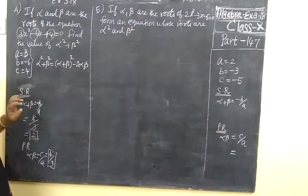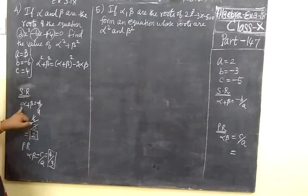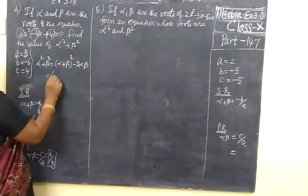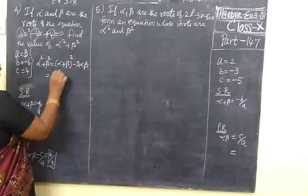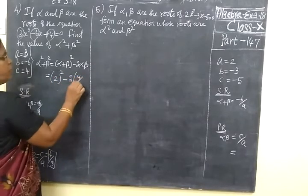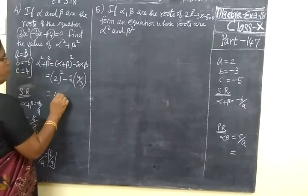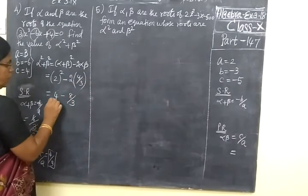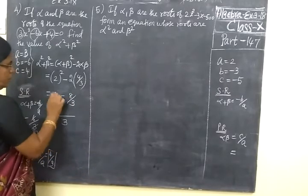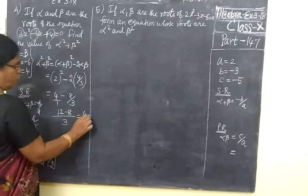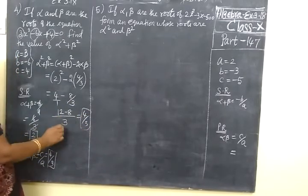We are substituting the root. Sum of roots is alpha plus beta. Product of roots is alpha beta. So alpha plus beta 2, we substitute. So 2 square minus 2 bracket, alpha beta 4 by 3, equal to 4 minus 8 by 3. So you take LCM 3, cross multiply 12 minus 8 equals 4 by 3.